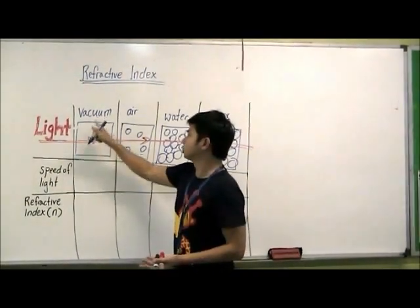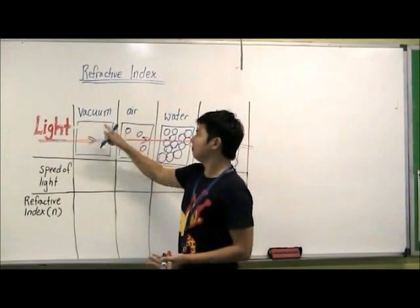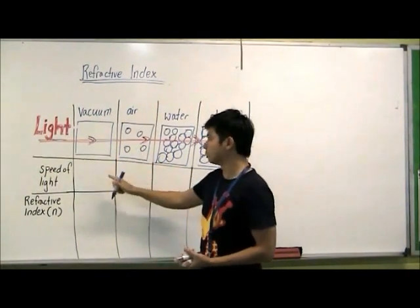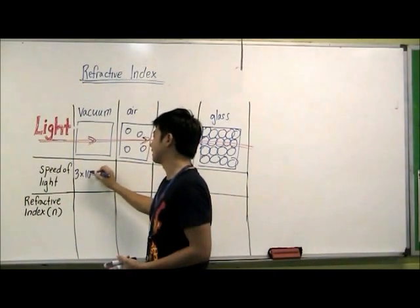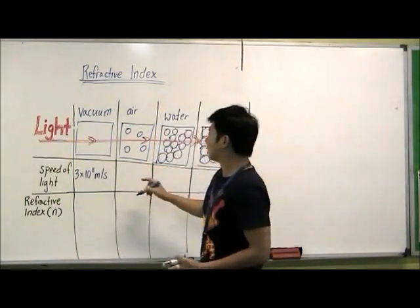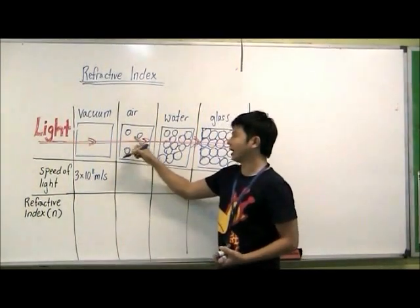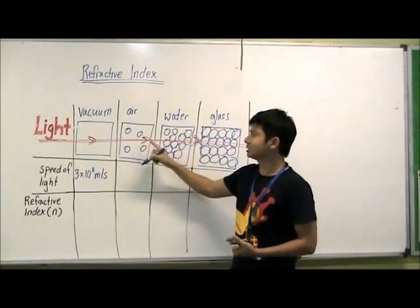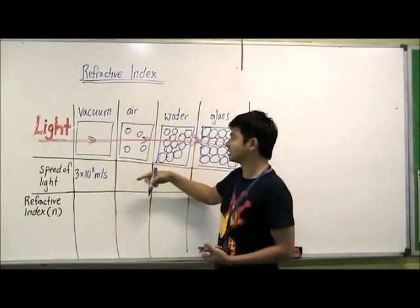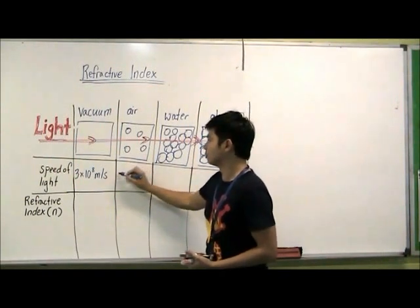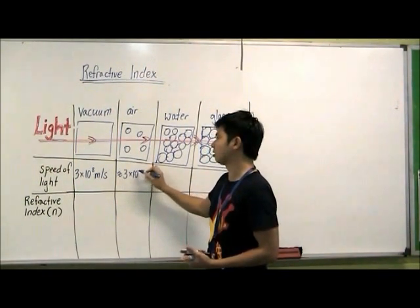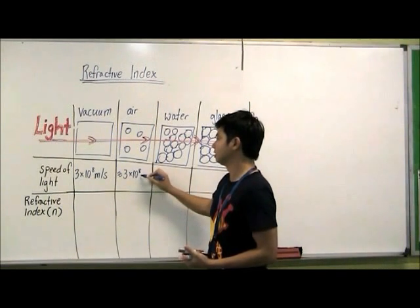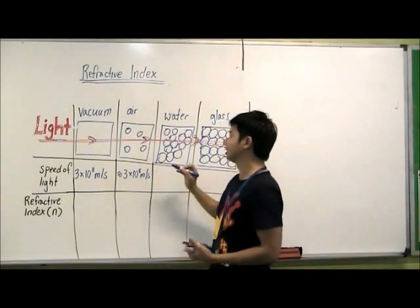When the light travels through vacuum, there is no obstruction so the speed will be the highest, which is 3 times 10 to the power of 8 meters per second. When it passes through air, there are a few particles so the speed will slow down slightly, but it will still be about 3 times 10 to the power of 8 meters per second.